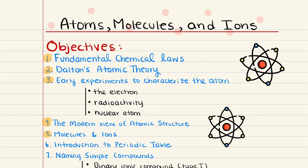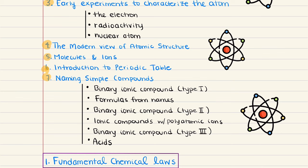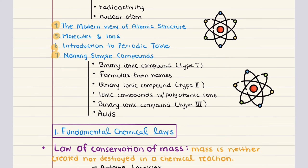The fifth objective is on molecules and ions, and we're going to learn the difference between covalent and ionic bonding. Then we'll move to the sixth objective, an introduction to the periodic table, covering periodic table trends including atomic radius, effective charge, ionization energy, electronegativity, and electron affinity. Last but not least, our final objective is learning how to name simple compounds.